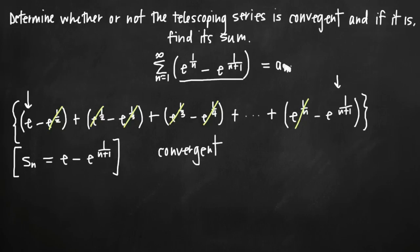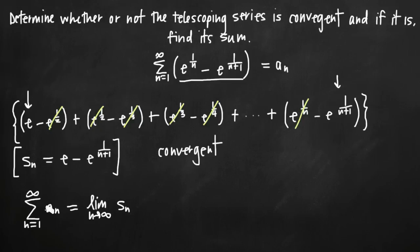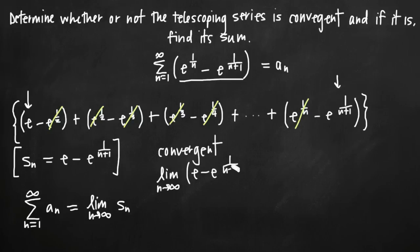Now the only thing we need to know is the sum of the series. It's easy once we have a model for s sub n, because by definition the infinite sum from n equals 1 to infinity of a sub n equals the limit as n goes to infinity of the series of partial sums s sub n. So we take the limit as n goes to infinity of our actual value for s sub n, which is e minus e to the 1 over n plus 1.